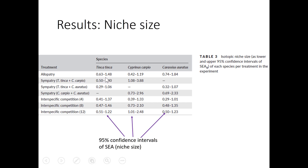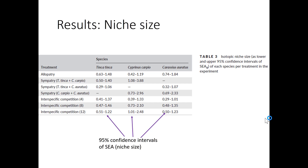They want to compare the niche when it's allopatric — when it's by itself — to conditions where it's grown sympatrically with carp, sympatrically with goldfish, and sympatrically between carp and goldfish. There's a dash in one cell because that condition doesn't apply to the niche of that species. These are 95% confidence intervals of the niche when it's alone versus when it's competing.